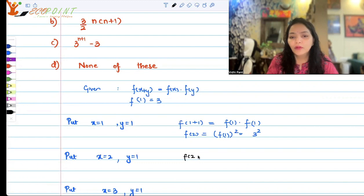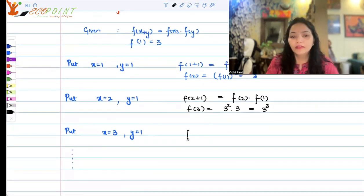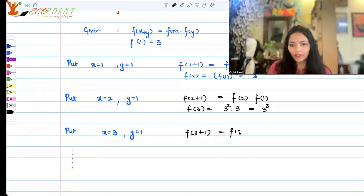Then, if I put x = 2, y as 1, I'm going to get f(2) × f(1). So f(3) will be equal to f(2) is 3^2 into 3. So that means 3^3. Similarly, if you want to check the pattern a little more, the next step is you can put 3 and 1. So f(3+1) will give you f(3). f(3), it will be f(3) × f(1). So that will give you the pattern that f(4) = 3^3 × 3, that is 3^4. So what are we getting? In case I'll be looking at f(n), I'm going to get 3^n.